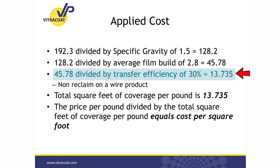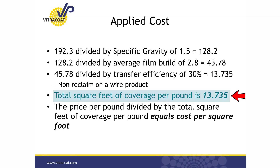When I buy that pound of product to coat this wire basket in a non-reclaim application, I can cover 13.73 square feet. As long as I know my cost per pound, I can come up with a cost per square foot. Then if I calculate the square footage of each part, I can come up with a cost of coating per part — just coating. This gives you a comparison of one coating to another and an applied cost comparison.